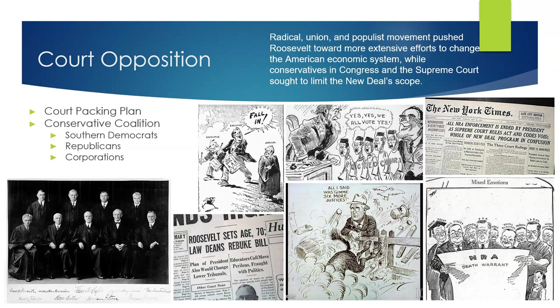Over time, as older justices retired and Roosevelt had the opportunity to appoint new ones, the court's composition changed and it became more receptive to New Deal programs. The failure of the court packing scheme, coupled with the recession that began in 1937, led conservative Southern Democrats to begin to ally with Republicans and corporations to try and block more New Deal programs. The Roosevelt recession raised concerns about the effectiveness of FDR's economic policies, further strengthening the conservative coalition.